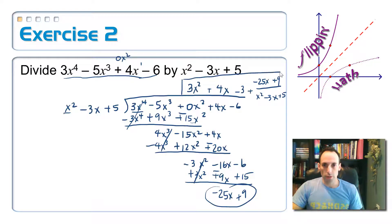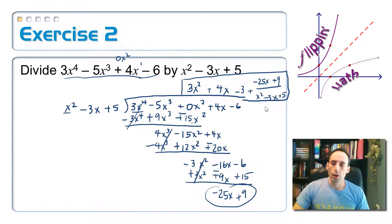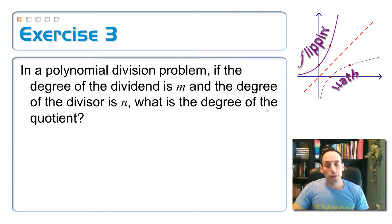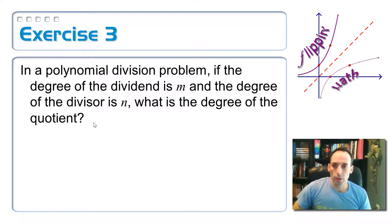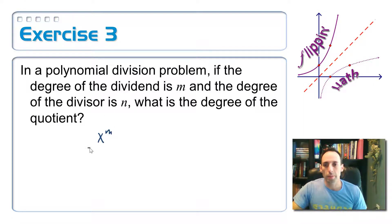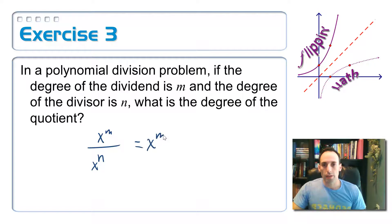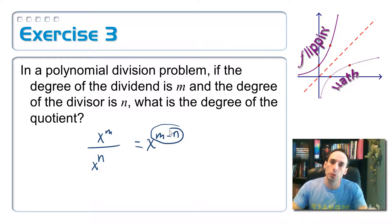There we go — here is my final answer. Now let me ask you another question about polynomial division. If the degree of the dividend is m and the degree of the divisor is n, what's going to be the degree of the quotient? If this is x to the m divided by x to the n, whenever I divide I subtract my exponents, so this should be x to the m minus n. So m minus n is going to be the new degree of the answer.